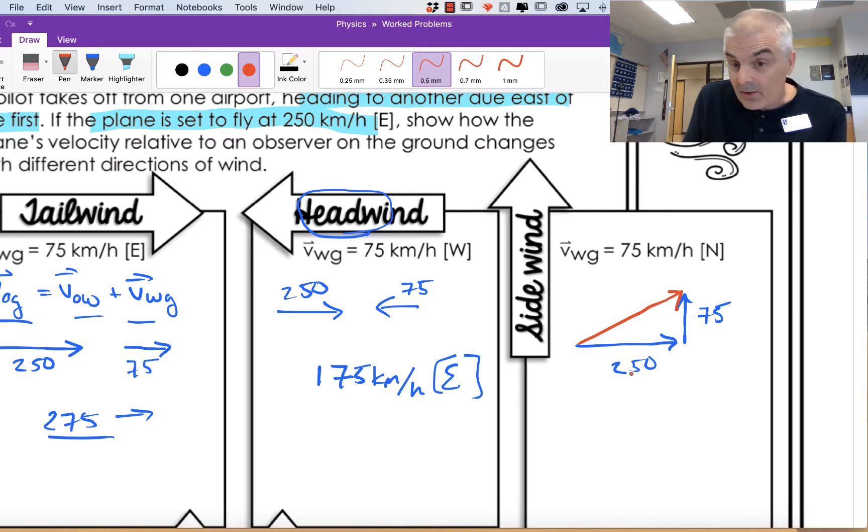Let's do that. This becomes Pythagorean theorem. So the actual velocity will be v equals the square root of 250 squared plus 75 squared. And if you get your calculator out, trust me, what you're going to get is v equal to 260 kilometers per hour.